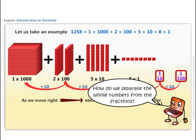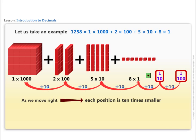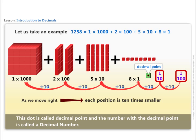How do we separate the whole numbers from the fractions? We need to use a dot to know where the unit position is. This dot is called decimal point and the number with the decimal point is called a decimal number.